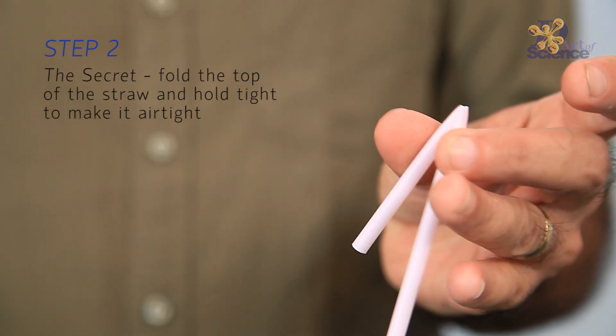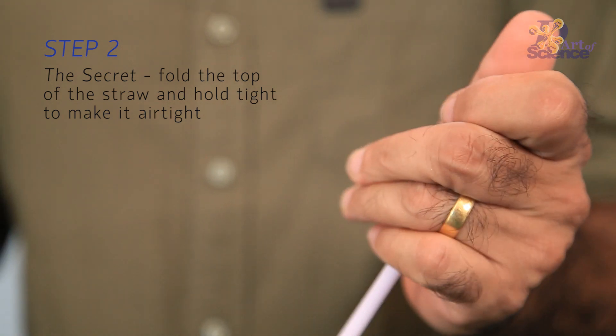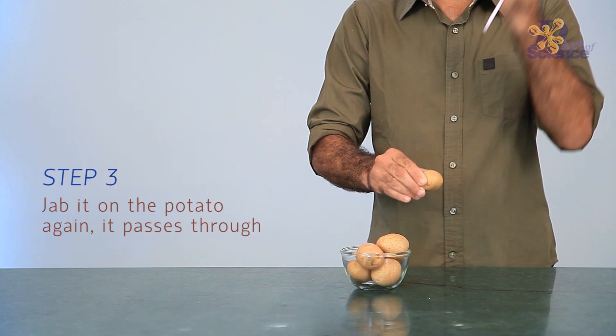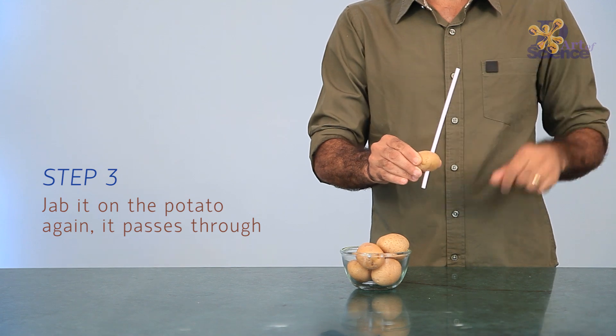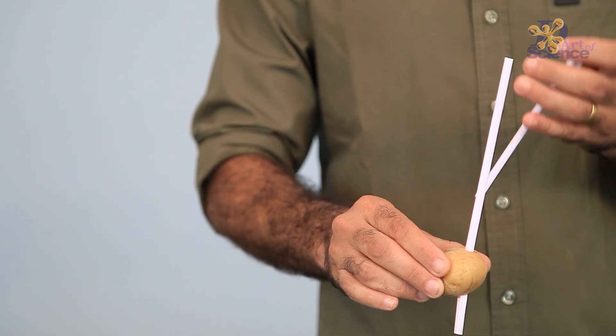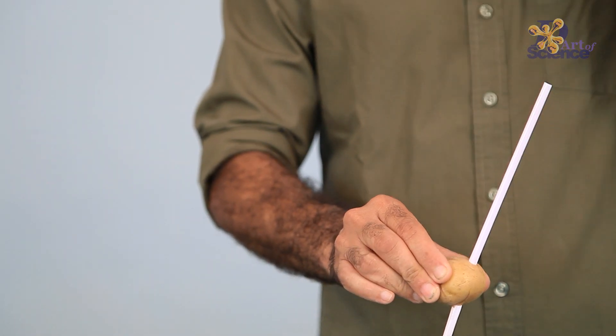But in its second attempt, when one end of the straw is folded, it blocks the opening, not only trapping the air inside the straw but also resulting in the compression of air while the straw goes right through the potato.